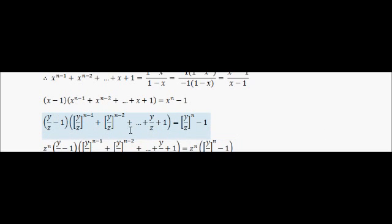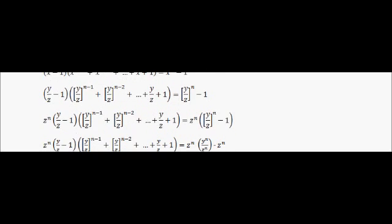The next bit seems very complicated but it's actually quite simple. All I've done is made a simple substitution — I've expressed x in terms of two new variables y and z. So x is equal to y over z. All I've done is replaced x with y over z throughout.